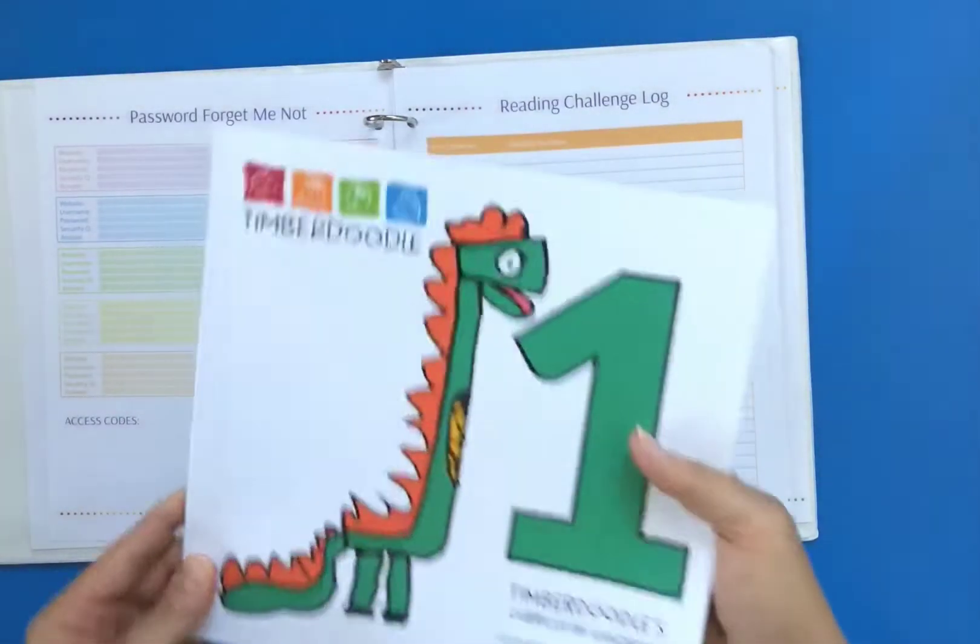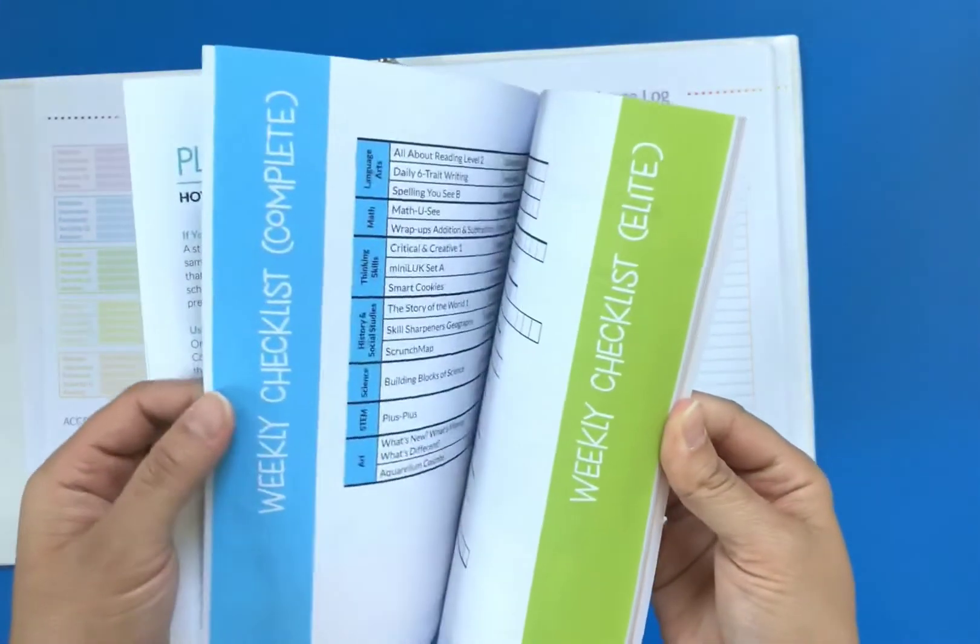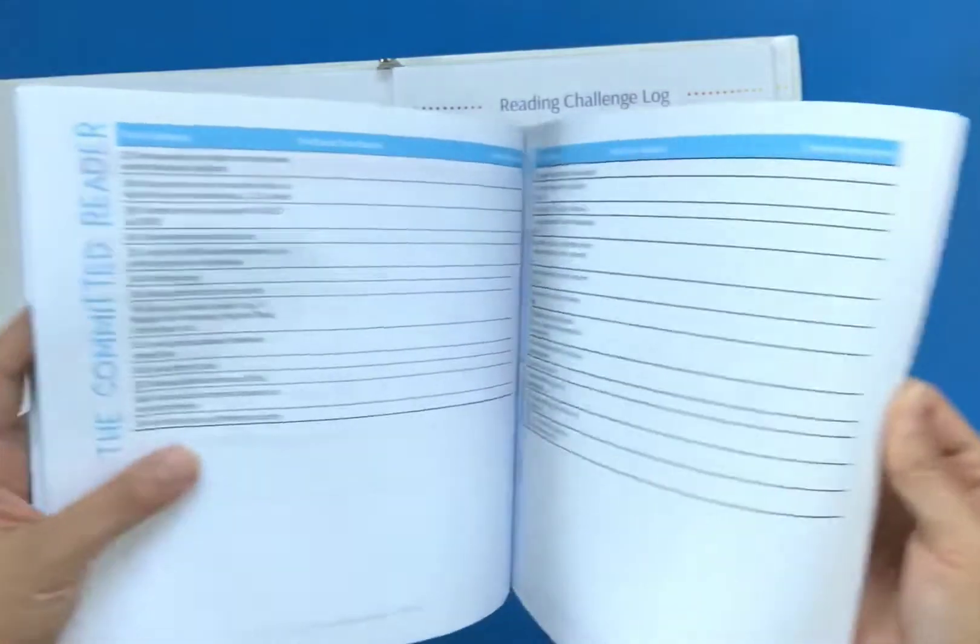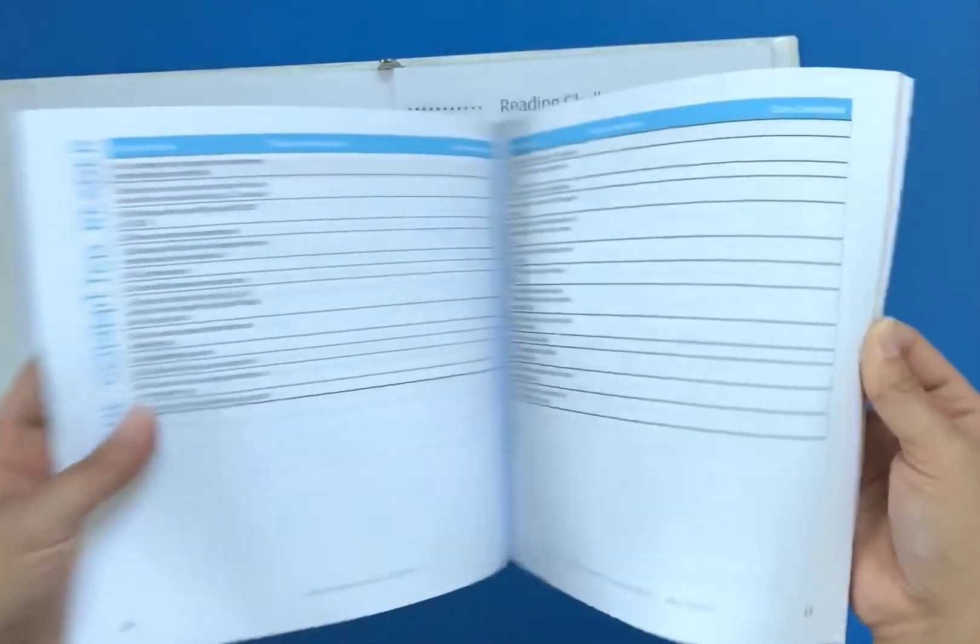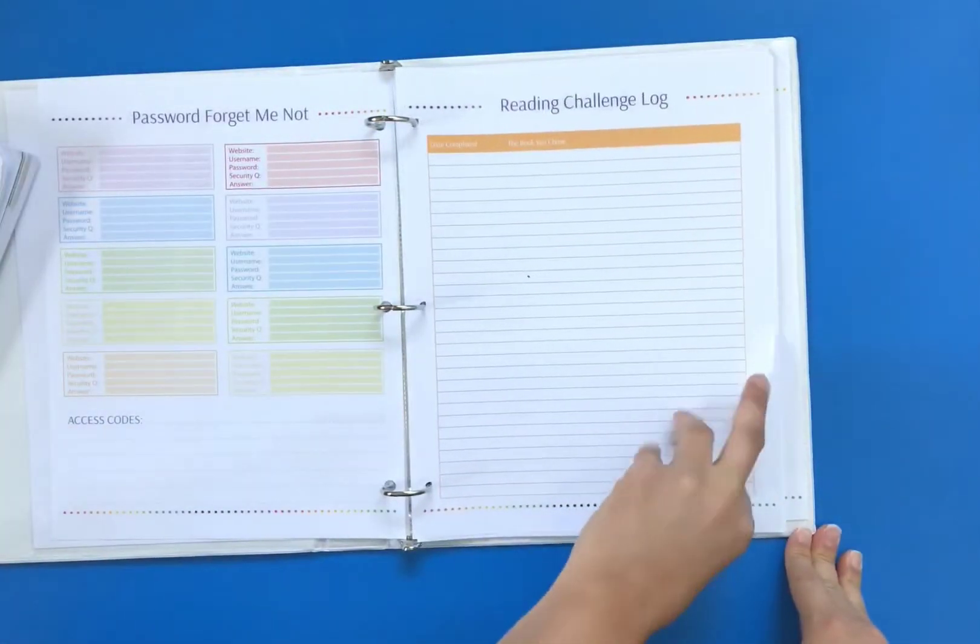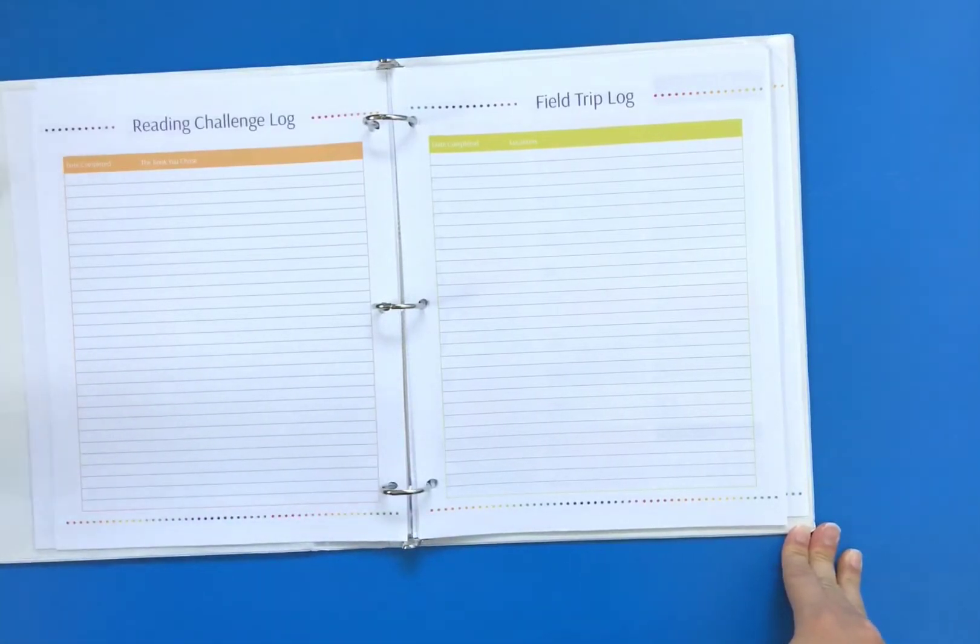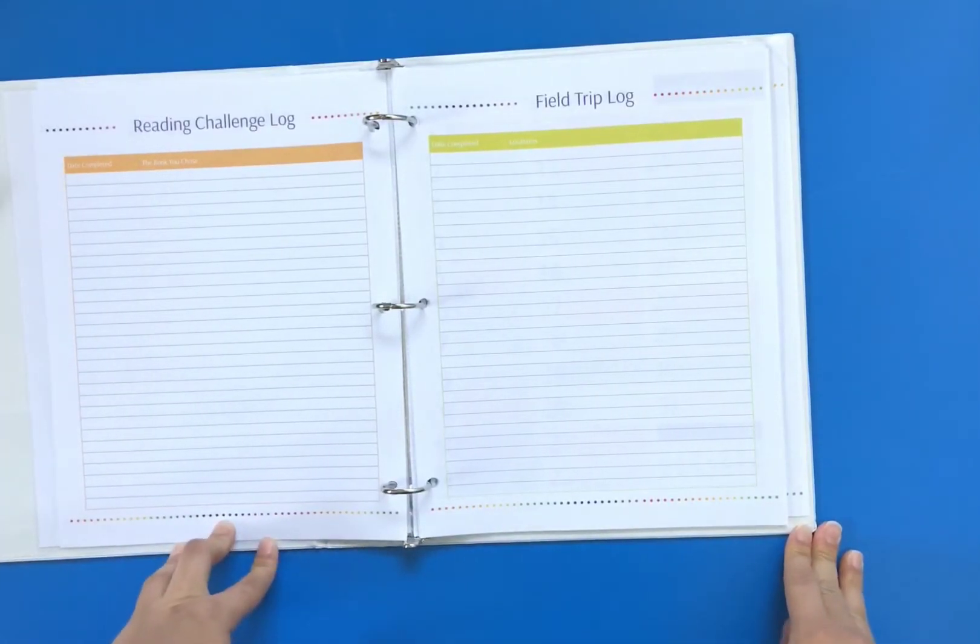Every year we use Timberdoodle as our curriculum, and I want us to get into more reading. They have a really big reading list, so we're gonna be keeping track of all the books we're reading. Now that my kids are a little older, we are probably gonna do a lot more field trips, so I want to keep track of those.